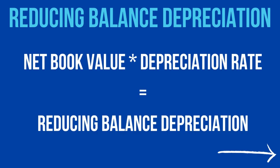This is very different to straight line depreciation. Straight line depreciation was the cost price minus the salvage value, divided by the number of years the asset was expected to be in the business. This is a very different formula — net book value has no part in straight line depreciation. Here it is net book value times the depreciation rate.